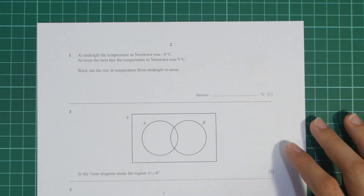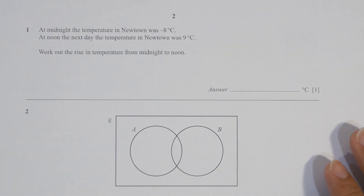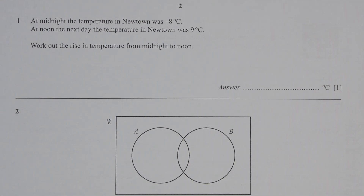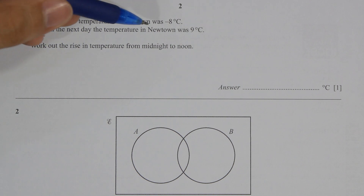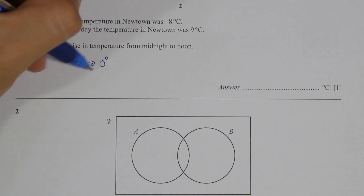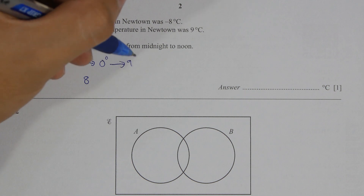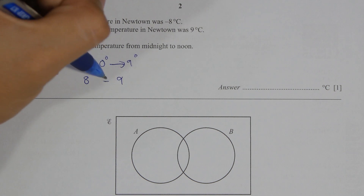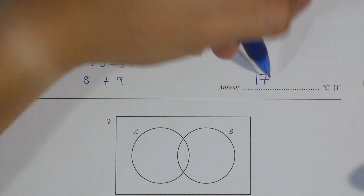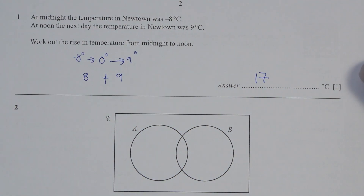For question 1, the temperature goes from negative 8°C to 0°C, so the difference is 8°C. From 0 to 9, the difference is 9°C. So the total temperature rise will be 8 plus 9, which equals 17.